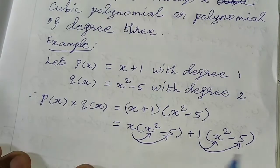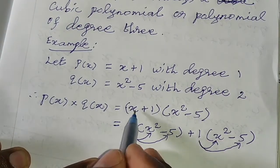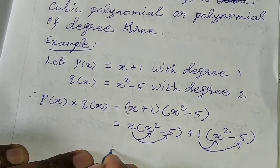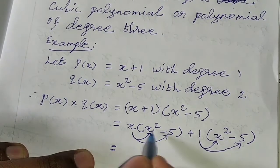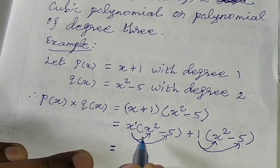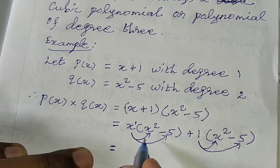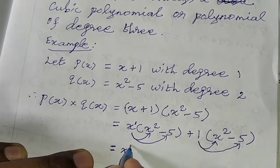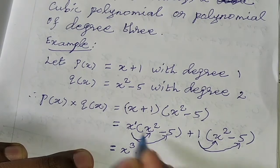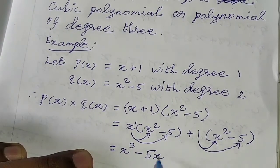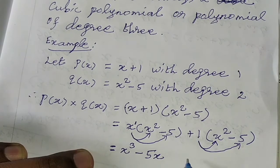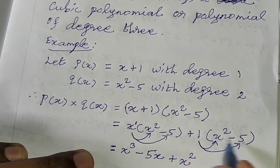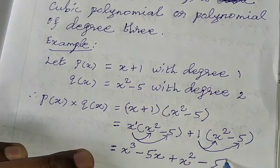Now we will multiply. How do we multiply? x plus 1 into x square minus 5. 1 into x square, x square, plus x square. Next, plus into minus, minus 5. It can be simplified.